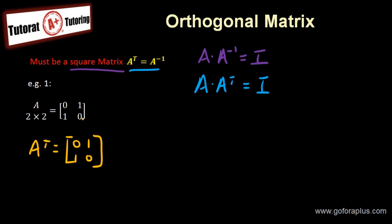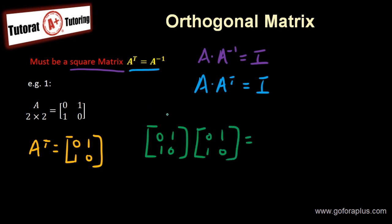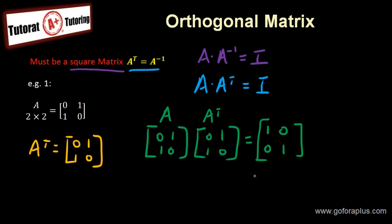Now if we multiply them together — A times A transpose, that is [0,1;1,0] multiplied by [0,1;1,0] — will this give us I? Because this is A and this is A transpose. If it equals I, then A transpose is A inverse. So 0 times 0 plus 1 times 1 is 1; 0 times 1 is 0; 1 times 0 is 0. Applying matrix multiplication, we get I. Therefore A transpose equals A inverse, so this matrix is an orthogonal matrix.